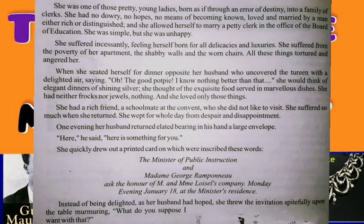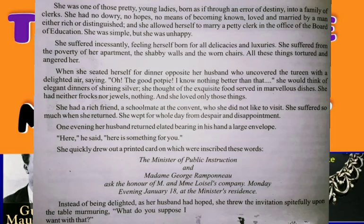She had a rich friend, a schoolmate at the convent, who she did not like to visit. Iske ek wealthy saheliyaan thay, rich saheliyaan thay, well-off thay — schoolmate at the convent, yeh ek hi class mein parhate thay. Who she did not like to visit — usko dekhna pasand nahi karti thi. Kyun? She suffered so much when she returned. Kyunki jab woh wahan se wapas aati thi, woh upset ho jati thi. She wept for whole days from despair and disappointment — jibhi wahan pe cheezein dekhti thi, uske paas achhe kapde hotay, zevarat hotay, to wapas aake rona shuru karti thi naumidi ki wajah se.